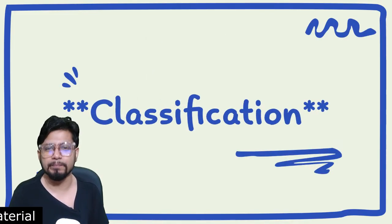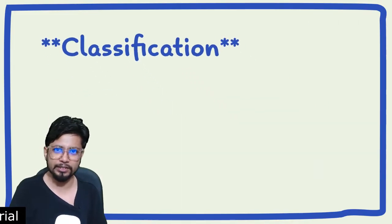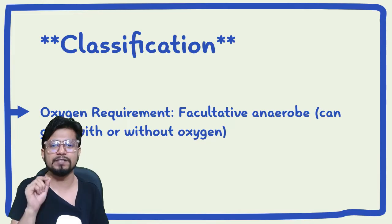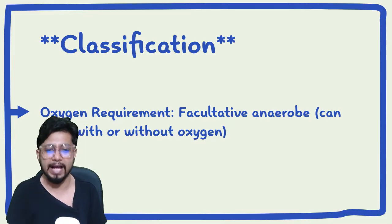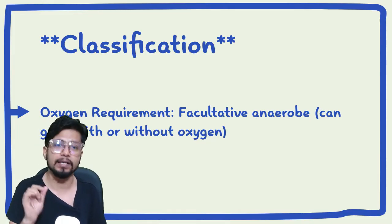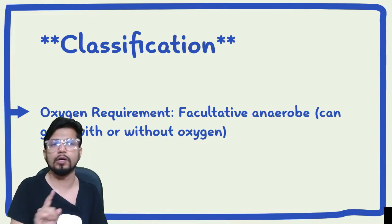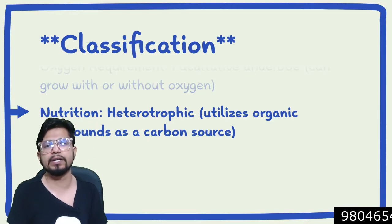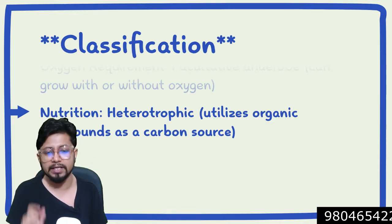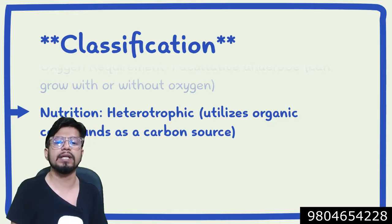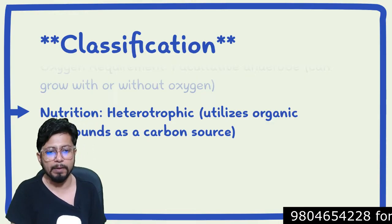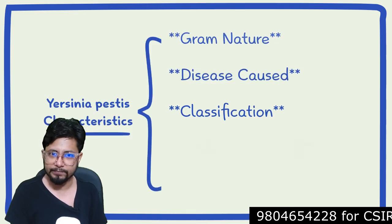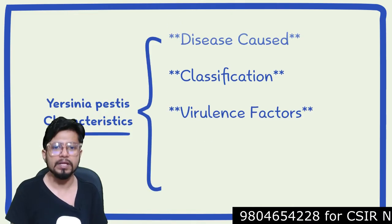Classification based on oxygen requirement: Yersinia pestis is facultative anaerobic, meaning it can grow with or without oxygen. Regarding nutrition, it is heterotrophic in nature, meaning it utilizes organic compounds as a carbon source for energy.